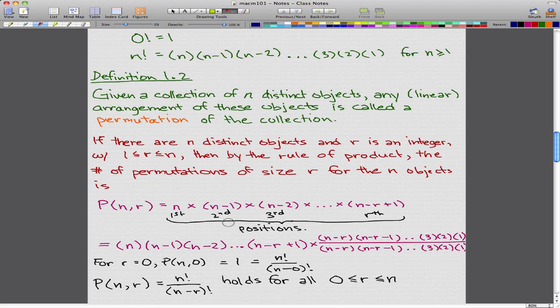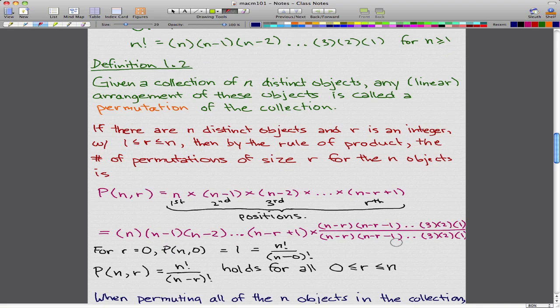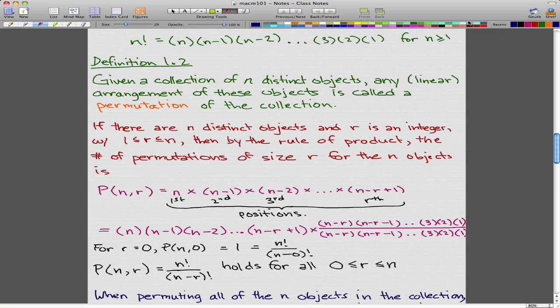Here's the stuff that you've got to actually know. This is the most important formula for permutations with respect to this being an introductory course. If there are n distinct objects and r is an integer with 1 ≤ r ≤ n, then by the rule of product, the number of permutations of size r for the n objects is P(n,r) = n(n-1)(n-2)...(n-r+1). From this formula, we can derive the most important formula. You should really write this formula down because you're going to use it a lot.